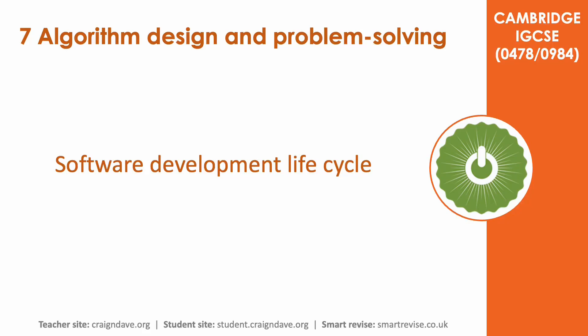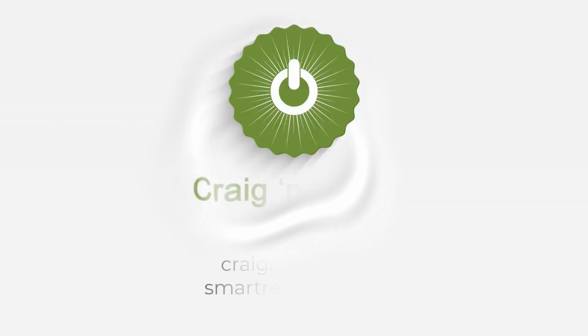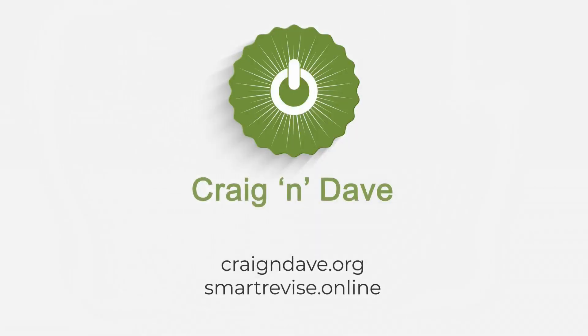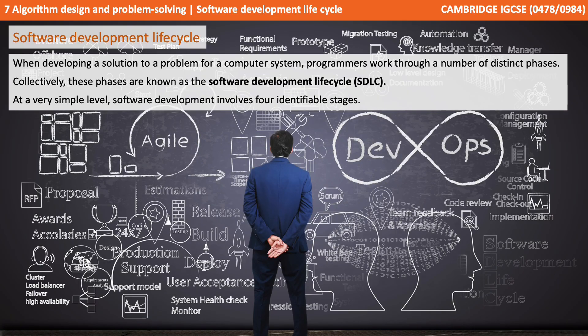In this video, we look at the Software Development Lifecycle. When developing a solution to a problem for a computer system, programmers work through a number of distinct phases. Collectively, these phases are known as the Software Development Lifecycle. At a very simple level, software development involves four identifiable stages.